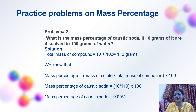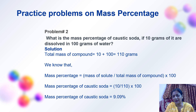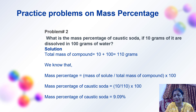Another problem on mass percentage: What is the mass percentage of caustic soda if 10 grams of it are dissolved in 100 grams of water? We put the values in the formula — mass of solute divided by total mass of solution, multiplied by 100 — and the answer comes out to be 9.09%.